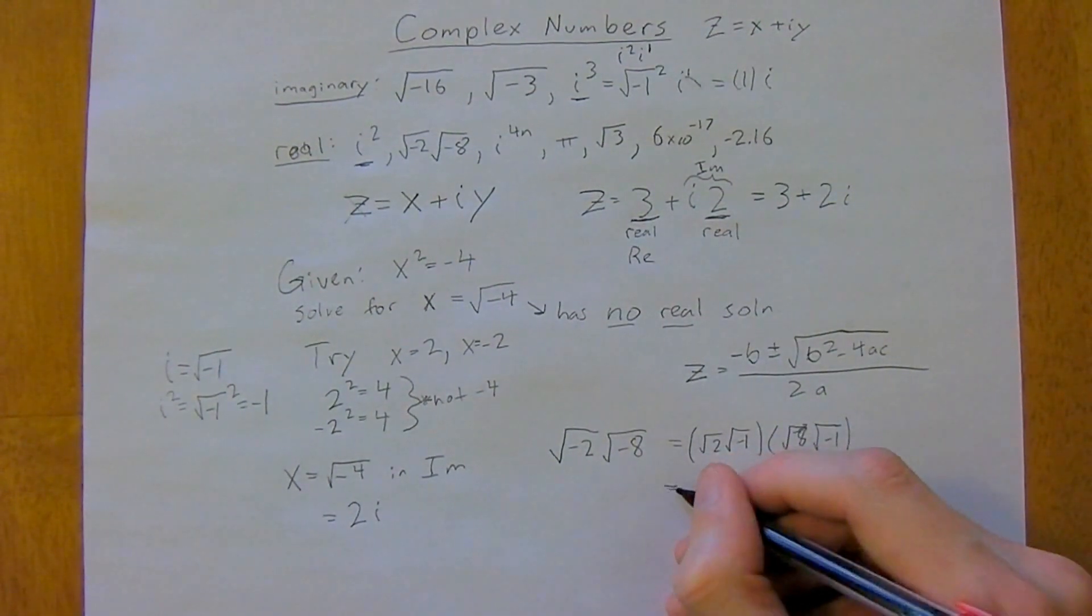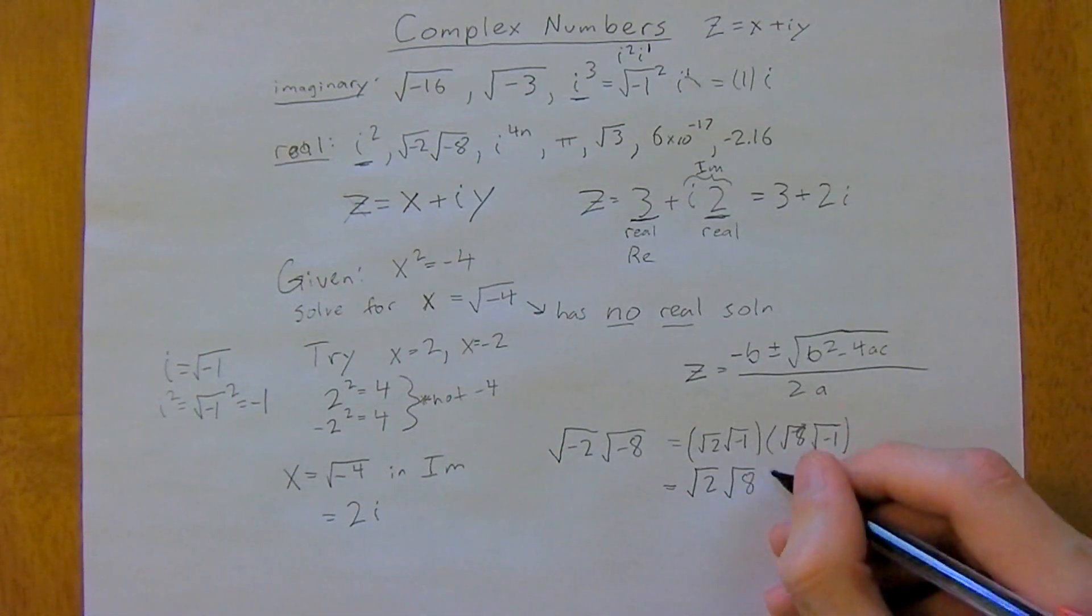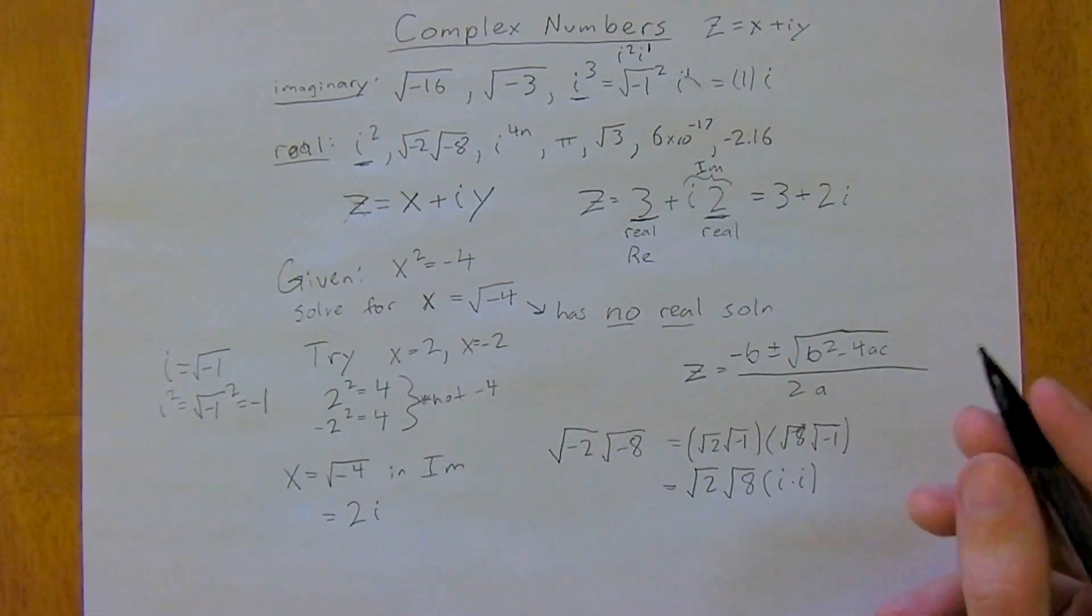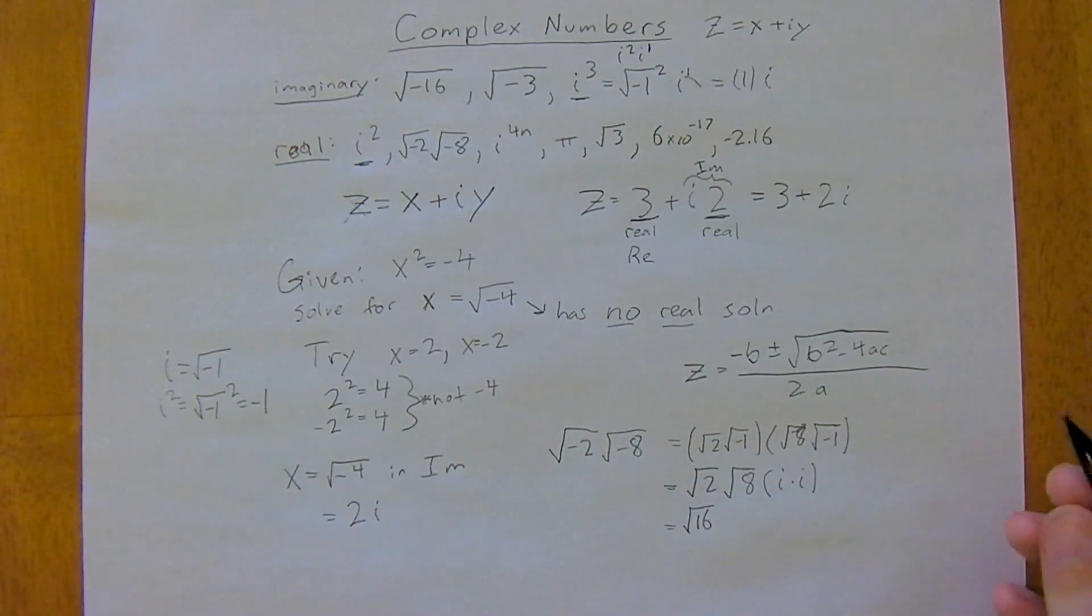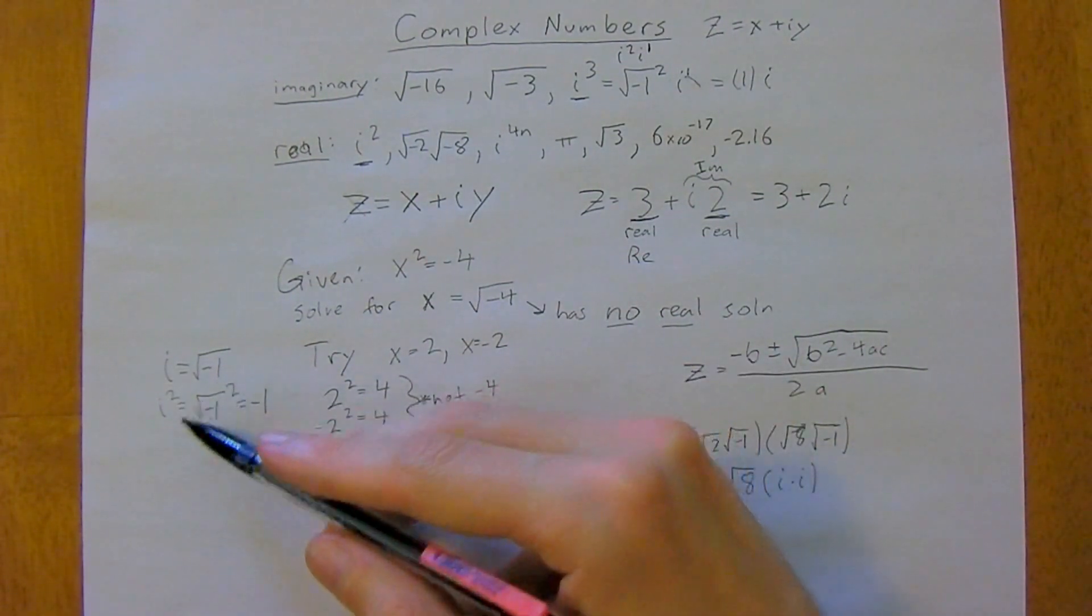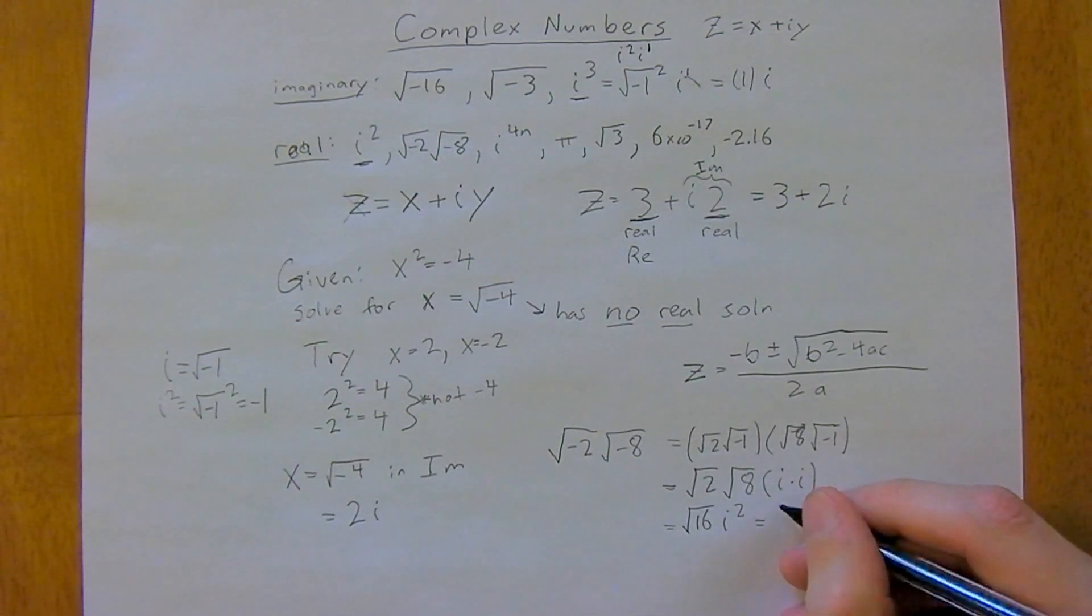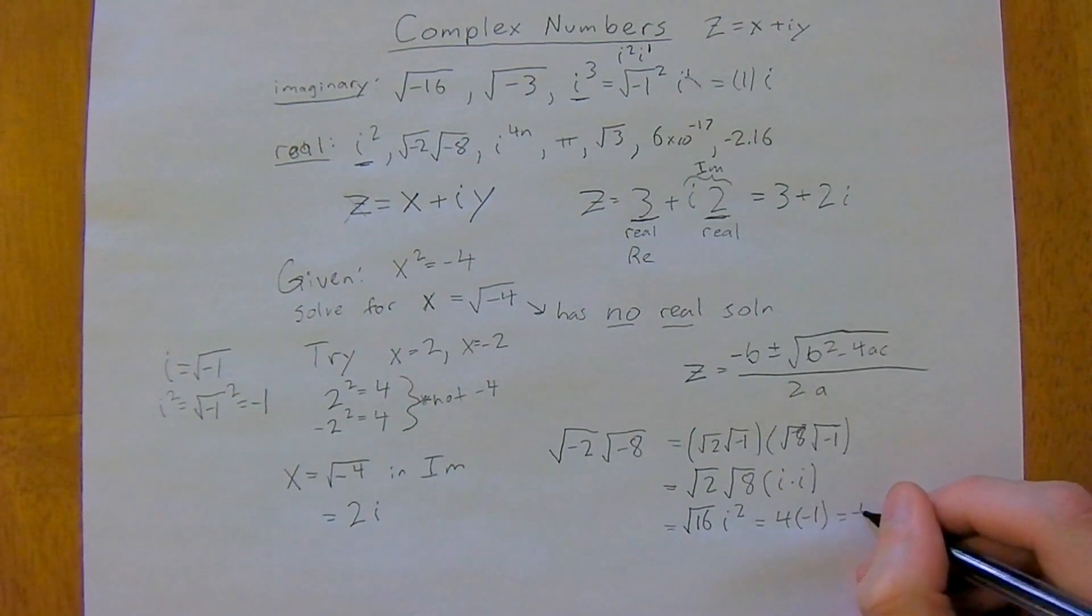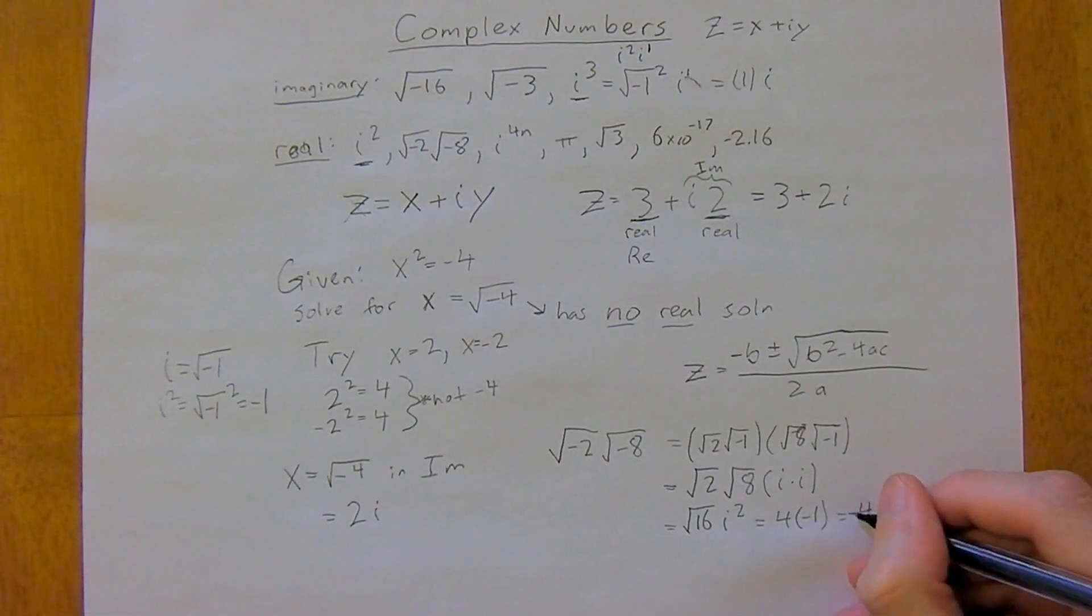This is going to be equal to square root of 2, square root of 8, i dot i. And this is square root of 16 times i squared. And remember i squared is just negative 1, so this is equal to 4 times negative 1, which is just negative 4, which is real.